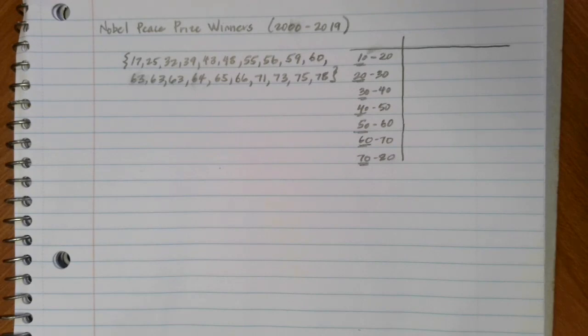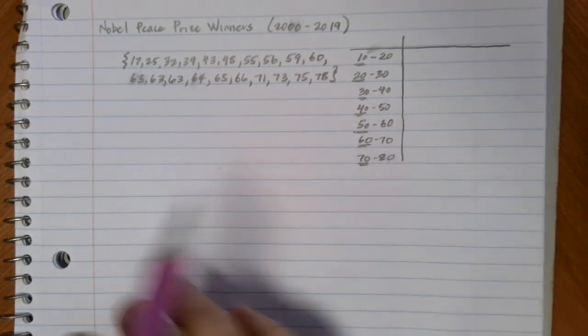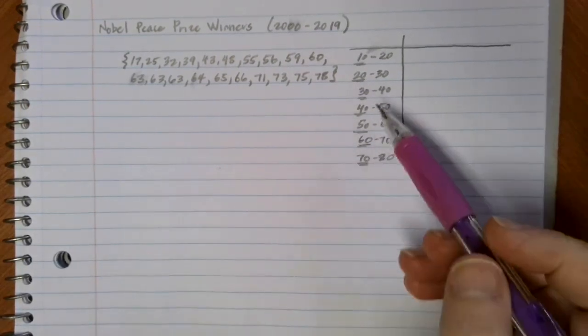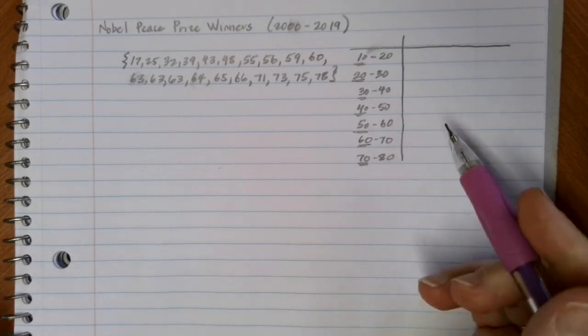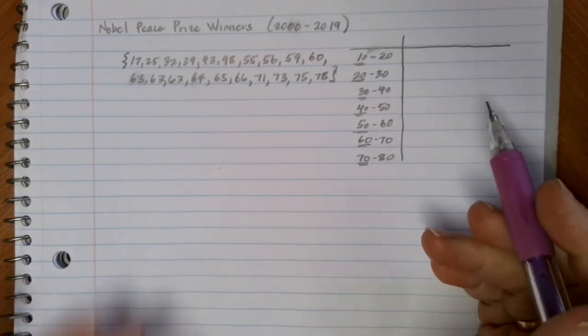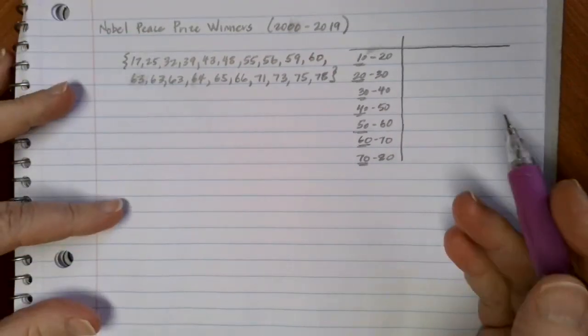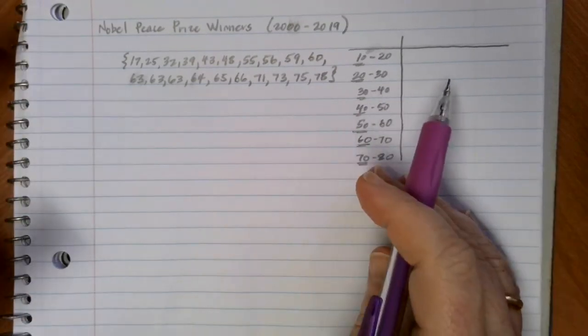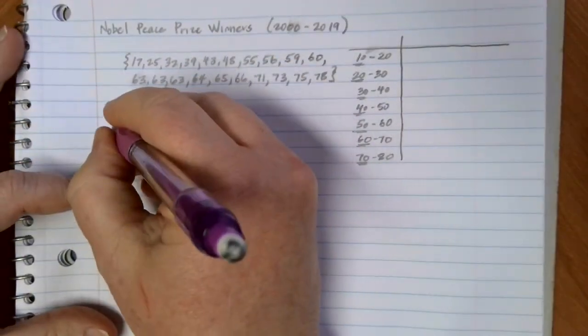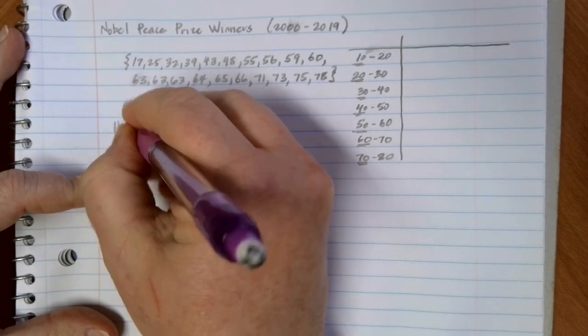We've talked about measures of range like the standard deviation and the interquartile range that give us an idea of how spread out the data points are. In this case, what we're going to be looking at is some ways to graphically represent data sets. When we're looking at numerical data sets like this one where we have a list of ages, one of the most common ways to display our data is using something called a histogram.